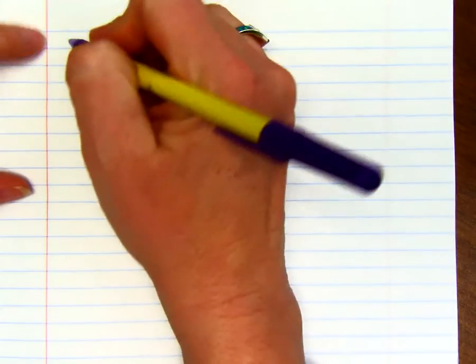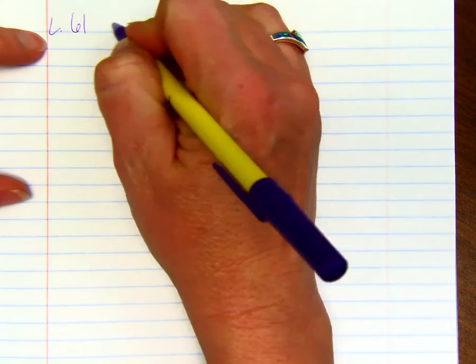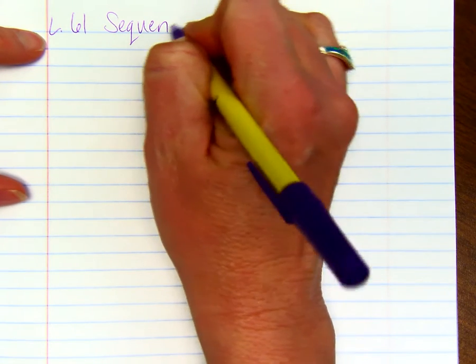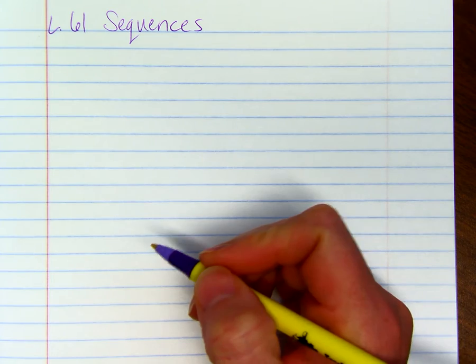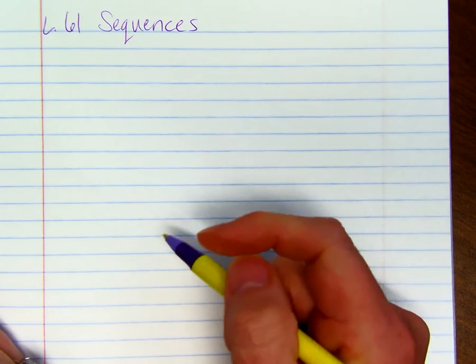Lesson 61, Sequences. A sequence is an ordered list of numbers that follows a pattern.